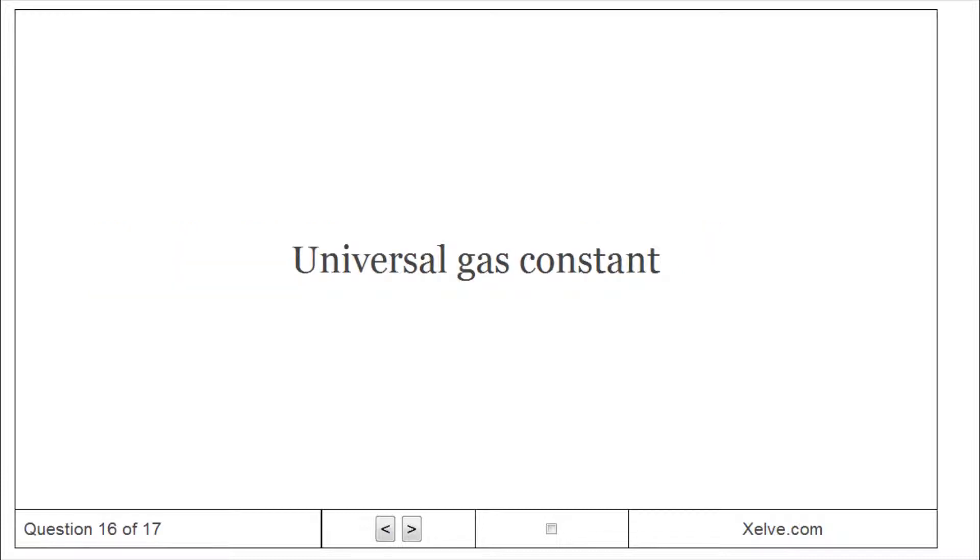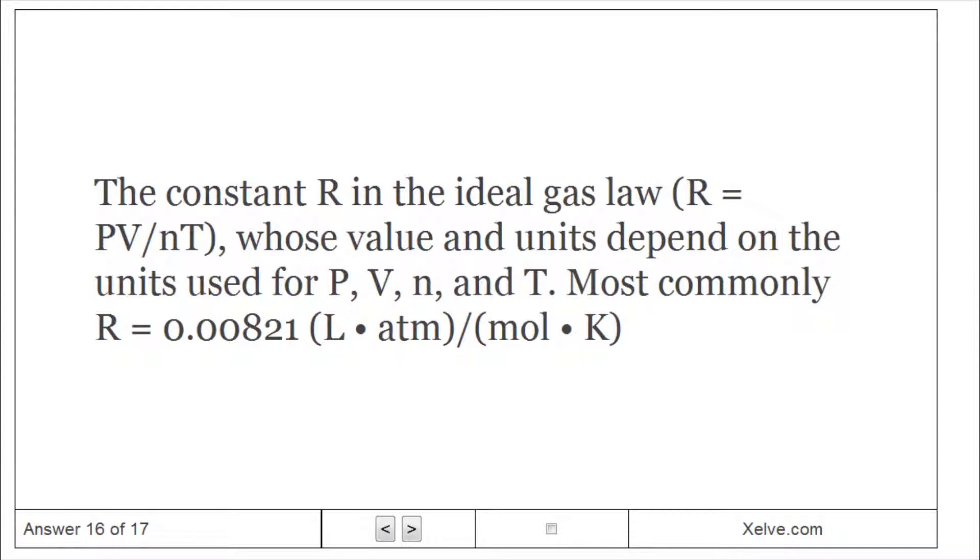Universal Gas Constant: The constant R in the ideal gas law (R = PV/nT), whose value and units depend on the units used for P, V, n, and T. Most commonly R = 0.0821 (L·atm)/(mol·K).